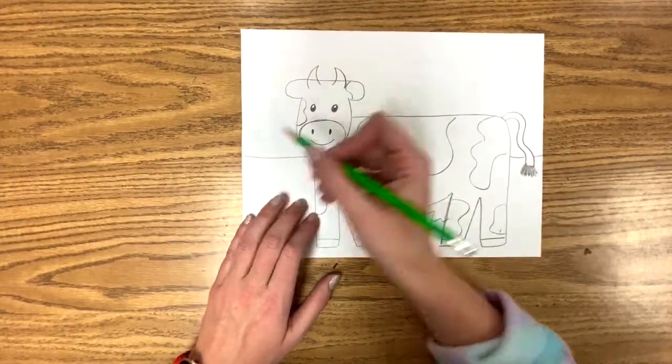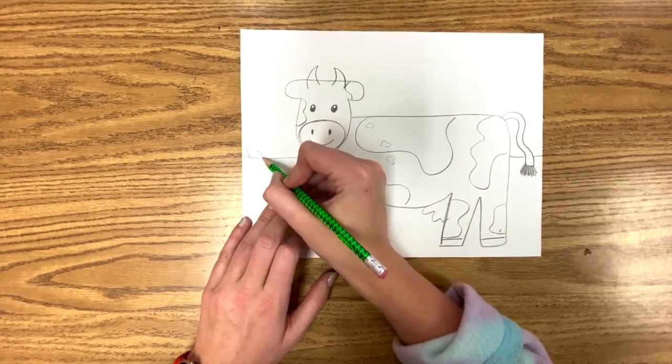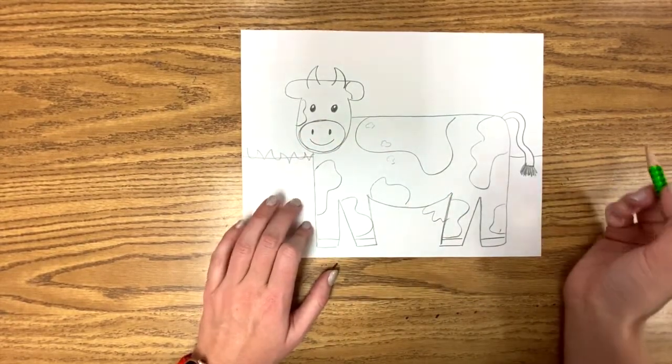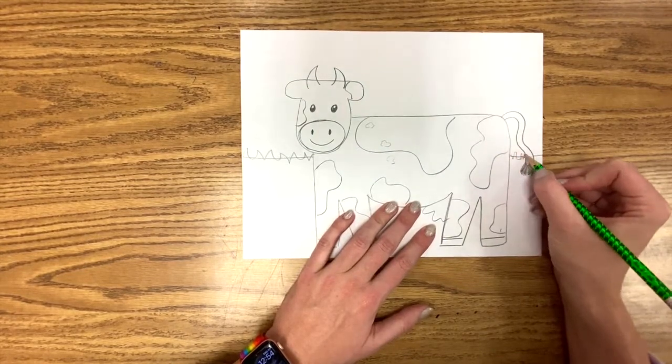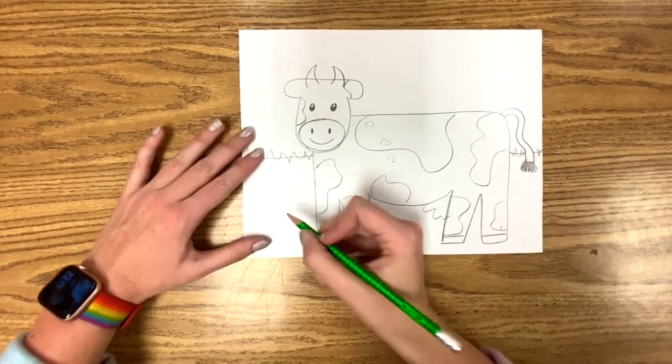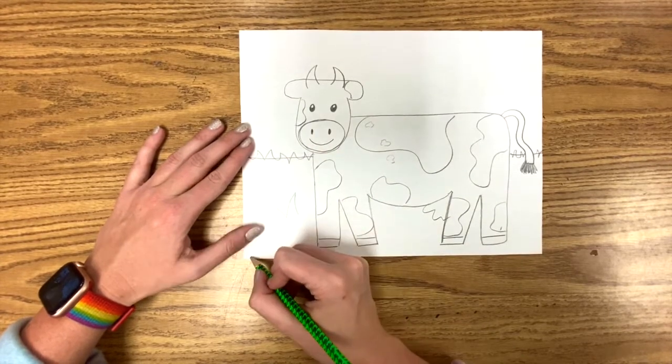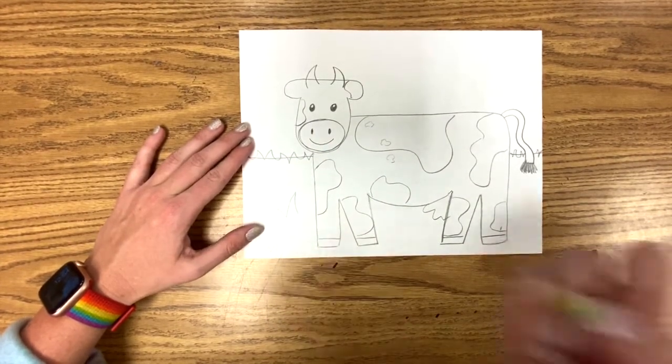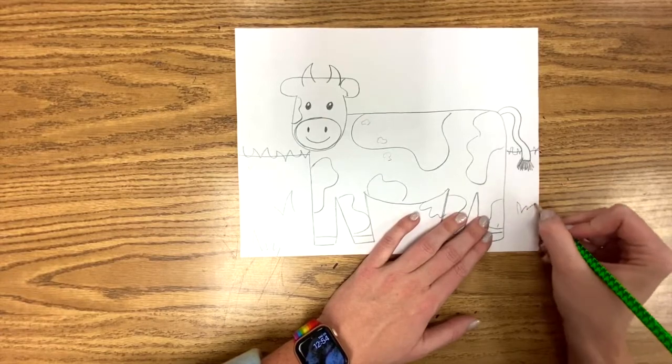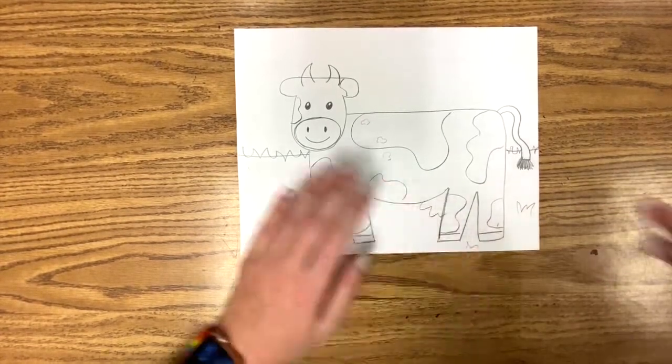You could do a straight line. Or even if you wanted it to look more like grass, you could make a different kind of line. A very grass texture line. And you could add some little grass details in there. Alrighty.